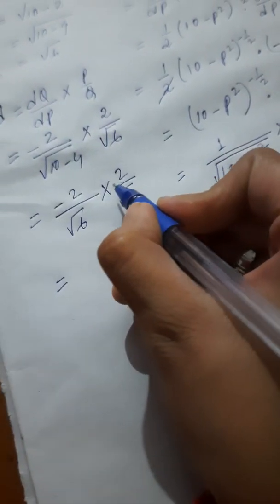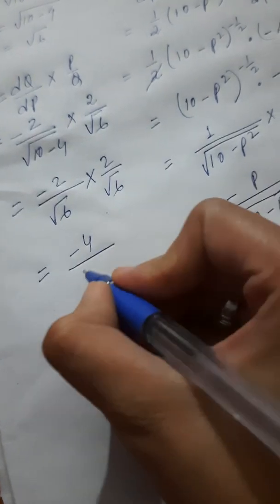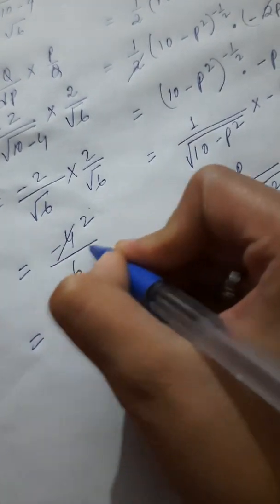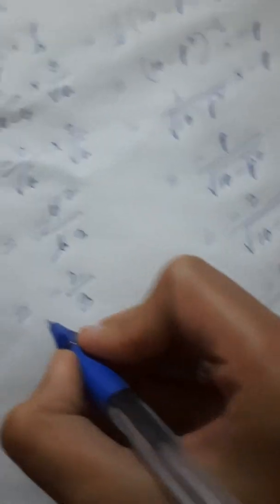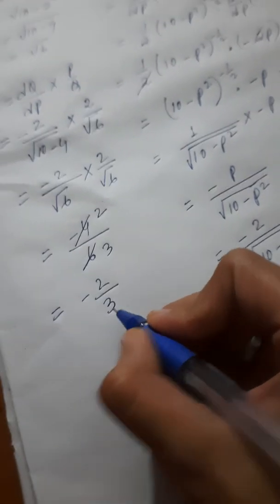Now, minus 2 by root 6 times 2 by root 6. So, minus 2 times 2 will be minus 4, root 6 times root 6 will be 6. We can cancel: 2, 3's are 6 gives minus 2 by 3. So our elasticity of demand will be minus 2 by 3.